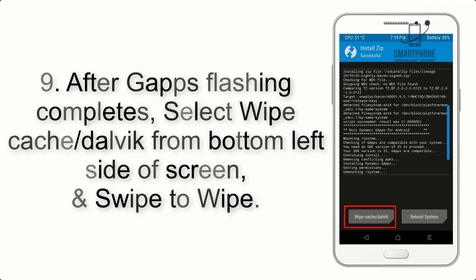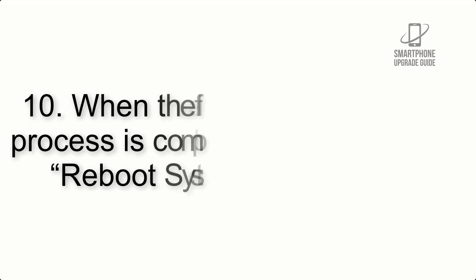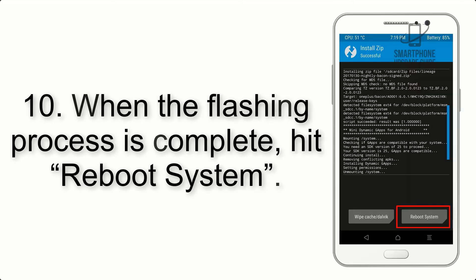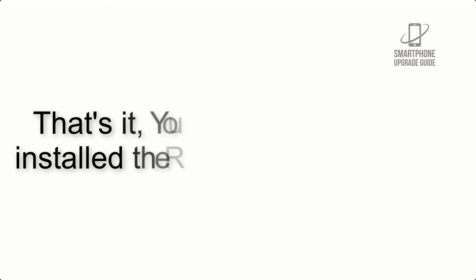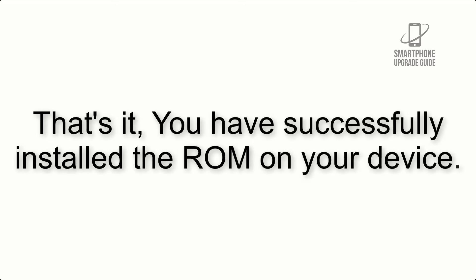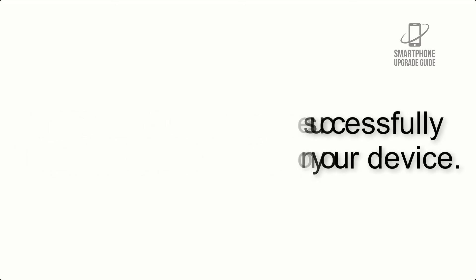Step 9: After GApps flashing completes, select Wipe Cache and Dalvik from the bottom left side of the screen and swipe to wipe. Step 10: When the flashing process is complete, hit Reboot System. That's it — you have successfully installed the ROM on your device.